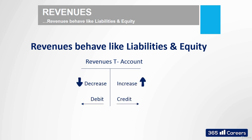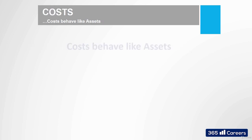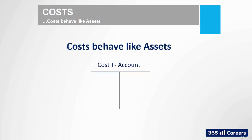On the other hand, costs behave in the opposite way — they decrease equity. So, quite intuitively, when we increase an account that behaves like equity, such as revenues, we credit it. When we increase an account that goes in the opposite direction, like expenses, we debit it. Think of revenues as future equity. This should be really helpful and clear your doubts.